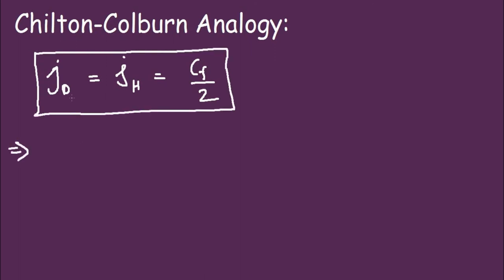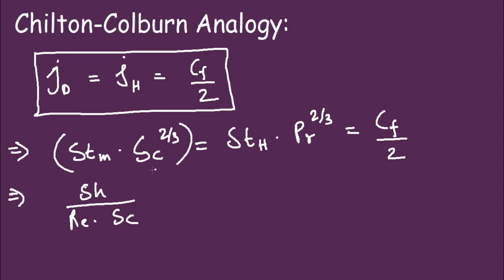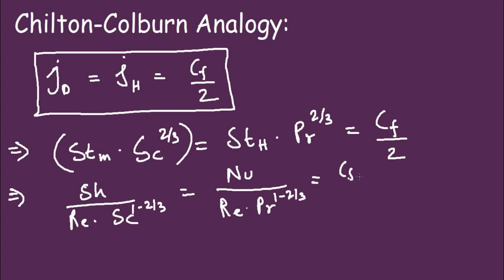Expanding the Chilton-Colburn analogy: the Colburn factor for mass equals Stanton number for mass times Schmidt number to the power 2/3, which equals Colburn factor for heat equals Stanton number for heat times Prandtl number to the power 2/3, all equal to Cf/2. Substituting the Stanton number definitions, for mass this becomes Sherwood number divided by Reynolds number times Schmidt number to the power 2/3, and for heat it becomes Nusselt number divided by Reynolds number times Prandtl number to the power 1 minus 2/3, equal to Cf/2.